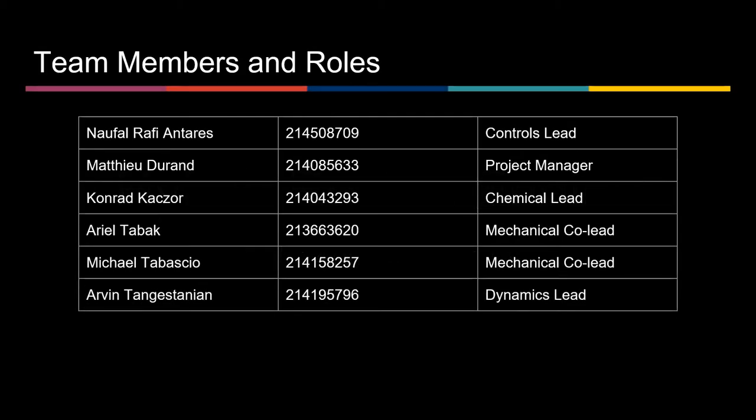Our team is composed of 6 people. Early on in the development, we chose roles based on what each of us wanted to focus on for this project. Rafi is the controls lead, he worked with actuators and circuits in our system. I am the project manager, I handled organization and systems engineering.